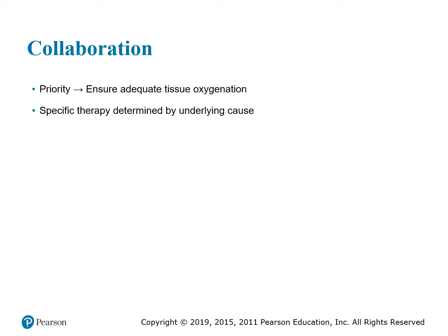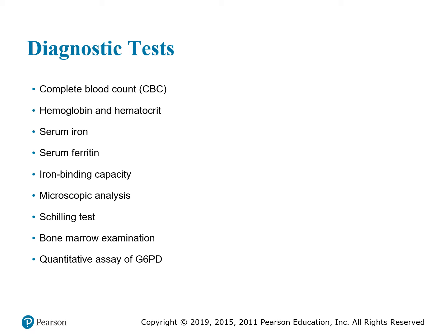For collaboration, ensuring adequate tissue oxygenation is the priority treatment. Specific therapies are determined by the underlying cause — you may need a blood transfusion, iron replacement, or a B12 shot every month. Blood work should be done on a routine basis. Teach the patient to look for bruising and signs of bleeding. Diagnostic tests include the CBC — where RBC, hemoglobin, and hematocrit are found — iron, ferritin, and iron binding capacity for iron stores, a microscopic analysis, a Schilling test, a bone marrow exam, and a quantitative assay of G6PD.